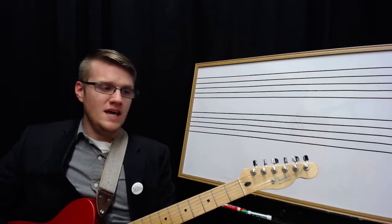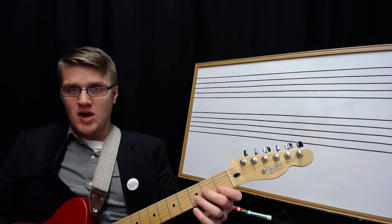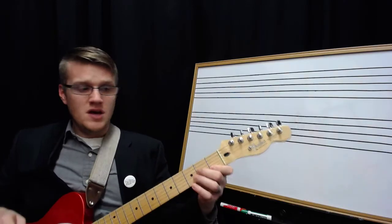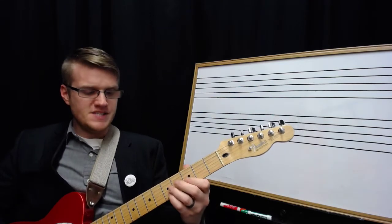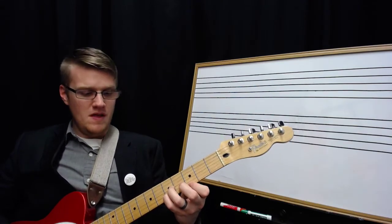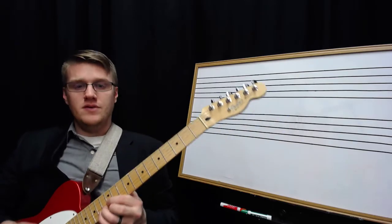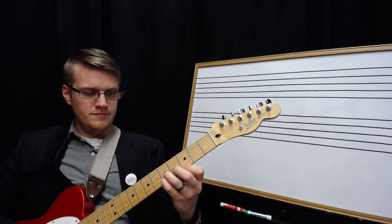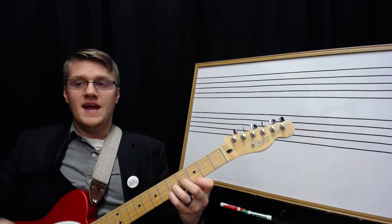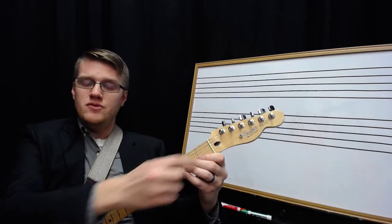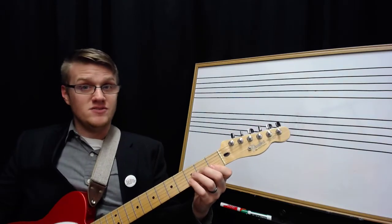The second thing you can do is you can spell out a triad with a certain quality throughout its inversions. So let's start with C in root position. Then I do C in first inversion. Then C in second inversion. Now, the next one in the circle of fourths is F, but I want you to play the lowest F you can play possible on your instrument with that string set.